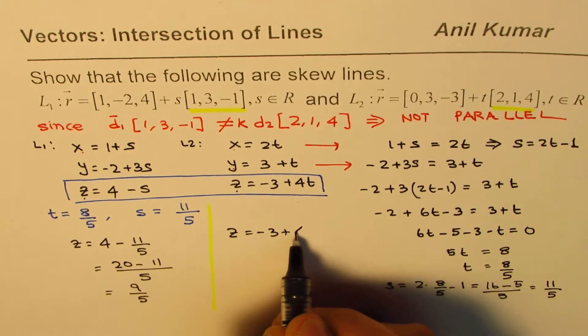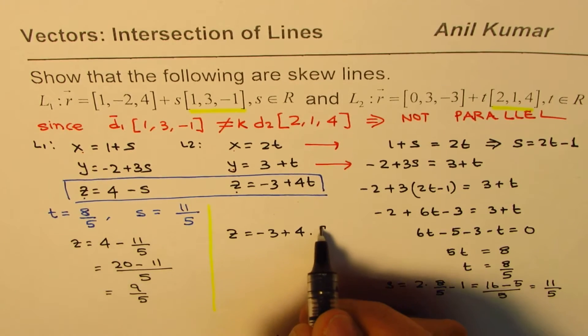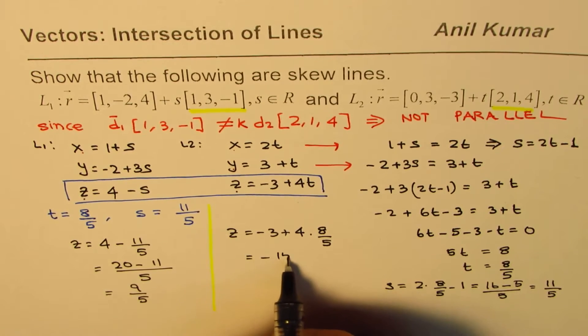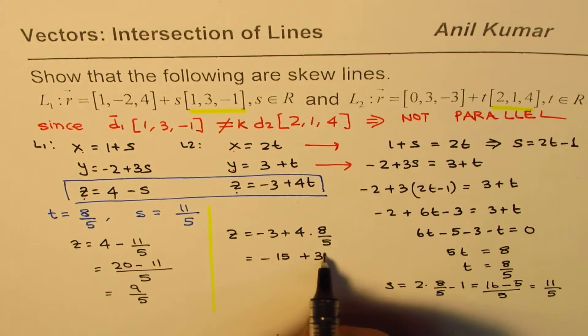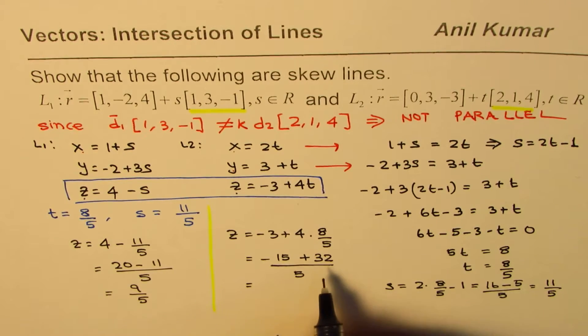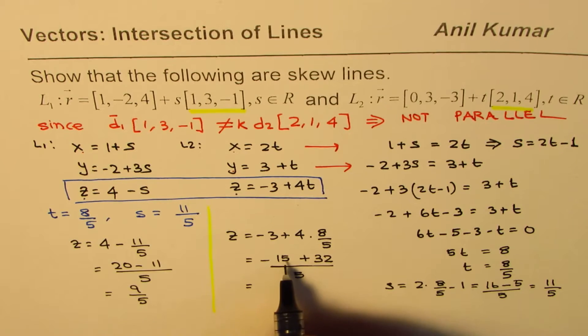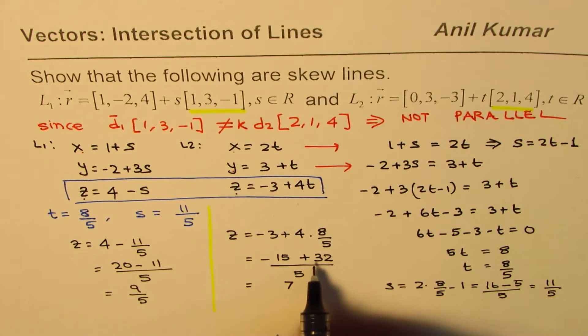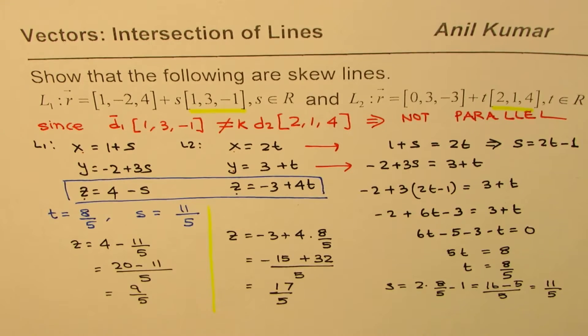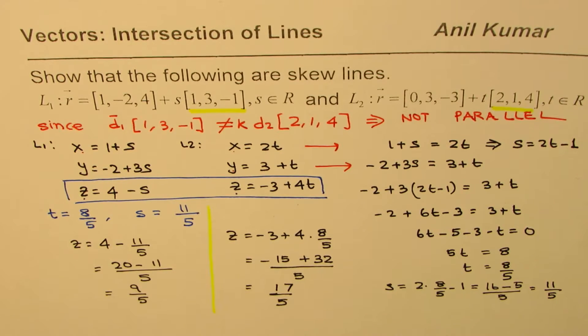For this equation we get z equals minus 3 plus 4 times 8 over 5 and that gives us minus 15 plus 32 over 5. If you take away, 12 take away 5 is 7 and 2 take away 1 is 1, we get 17 over 5. So these two values do not match.